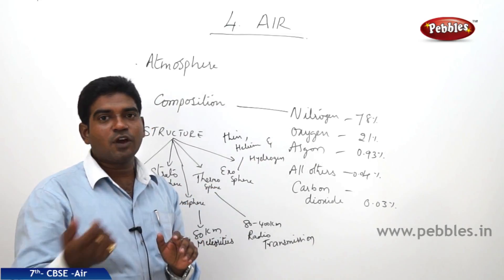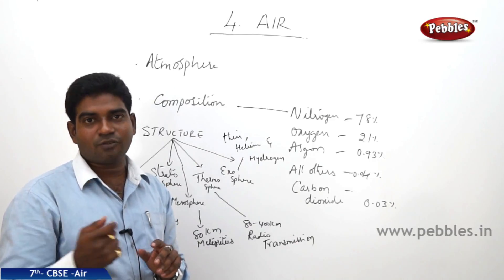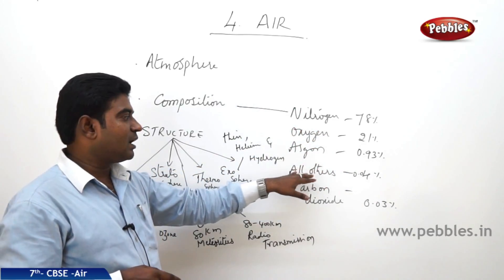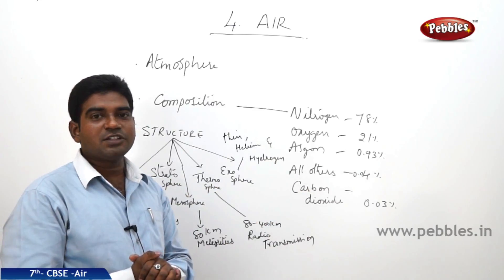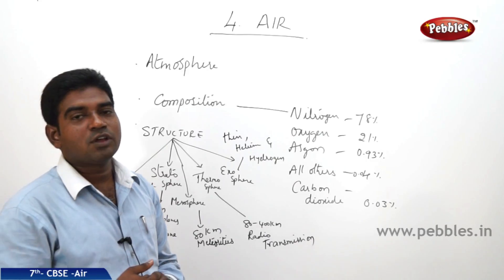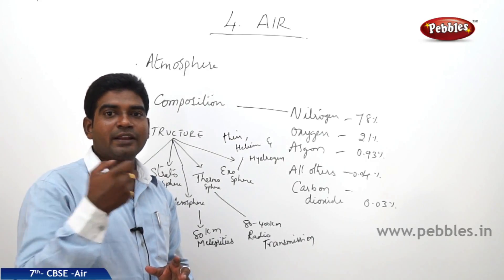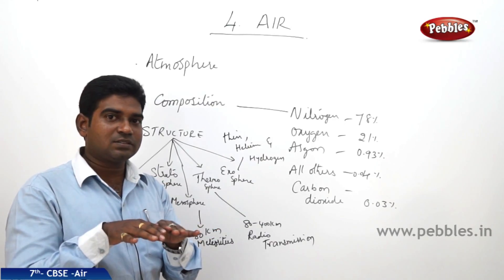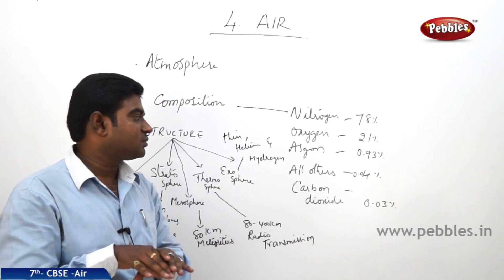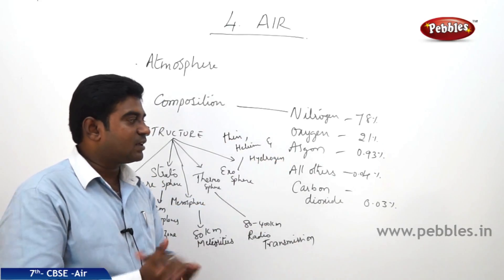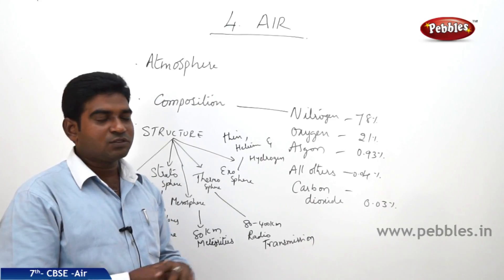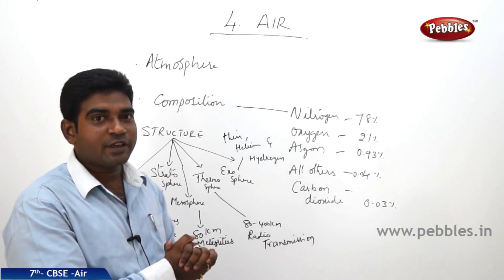Coming to oxygen, as we all know, oxygen is very important for every human to survive because we breathe in oxygen. Then we have carbon dioxide. Carbon dioxide is used by plants when they are doing the process of photosynthesis. They take carbon dioxide and release oxygen. So there is a perfect balance between the usage of carbon dioxide and oxygen. The other gases are argon, neon, krypton, xenon — altogether less than 1%. This is the composition of air.